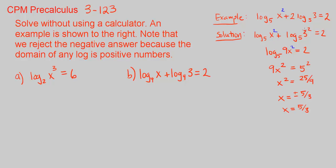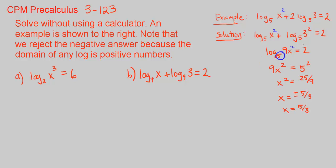So x squared times 3 squared gives us 9x squared. Now we rewrite log base 5 of 9x squared equals 2 in exponential form — that's just the definition of a log. This becomes 5 squared equals 9x squared. Dividing both sides by 9 gives x squared equals 25 over 9. Taking the square root of both sides, x equals plus or minus 5 over 3.